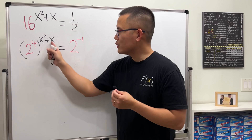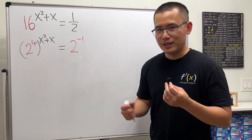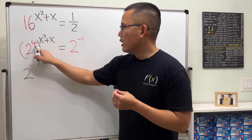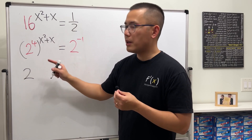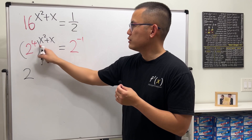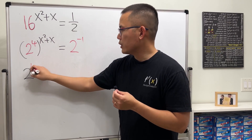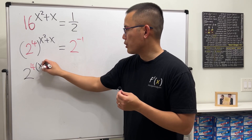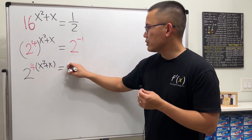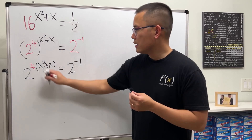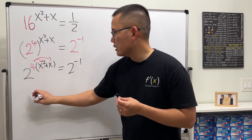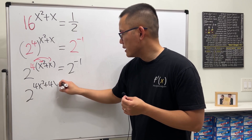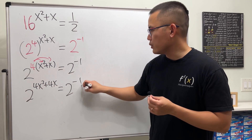Now we just have to fix this exponent. When we have a power raised to another power, we can multiply the two exponents. So we take 4 times — using parentheses because there are two terms — giving us 2 to the negative 1. Distributing: 2 to the 4x squared plus 4x equals 2 to the negative 1.